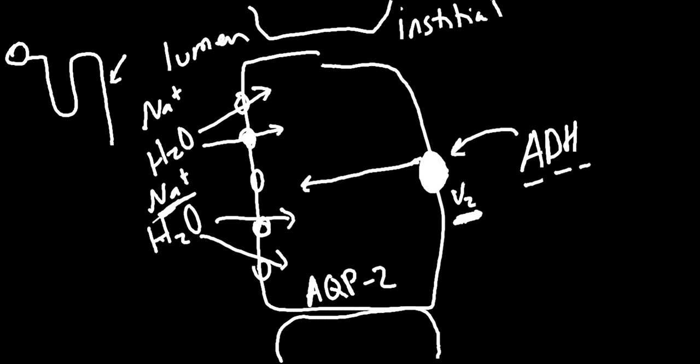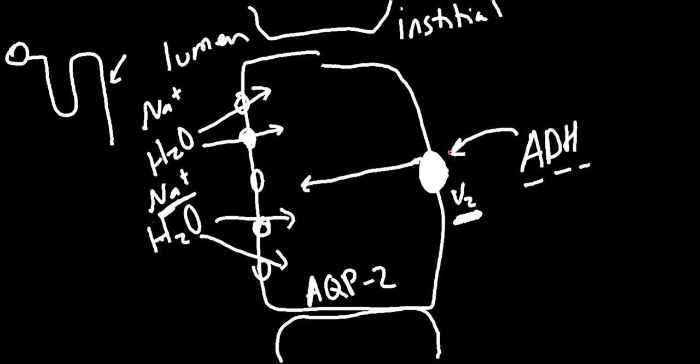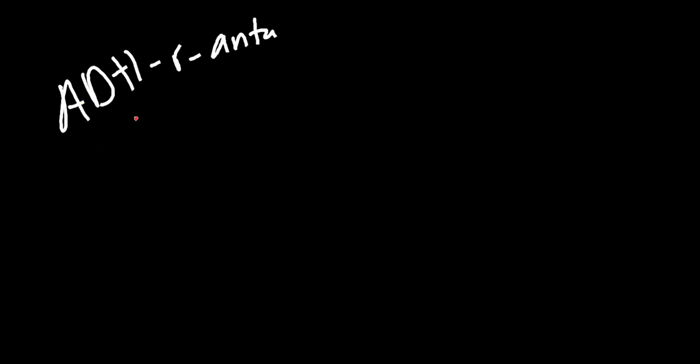When do we actually use these ADH receptor antagonists? Over here, we'll be antagonizing it, creating a block. So we have this ADH receptor antagonist, also known as conivaptan, the vaptan drugs. They'll come in and block this, creating a shield. And there's really one main use for when we'll use the ADH antagonist.